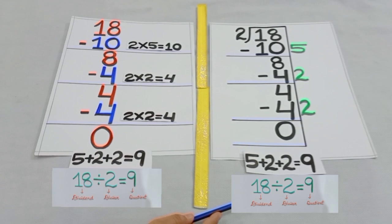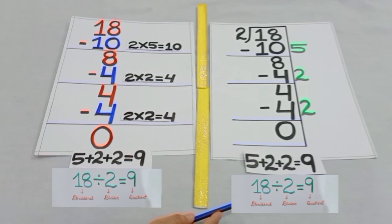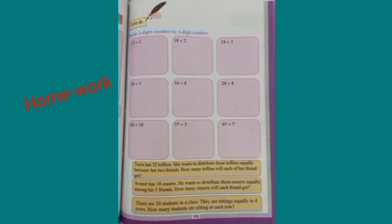Where 18 is the dividend, 2 is the divisor, and 9 is the quotient. For homework, dear students, solve the sums given at page number 115 of your maths book. Thank you.